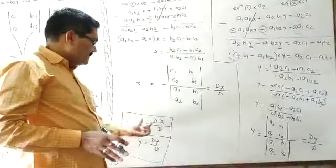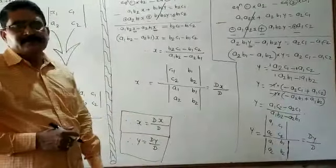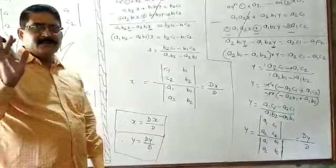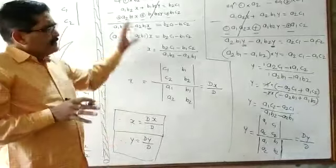This is Cramer's rule — x = Dx / D and y = Dy / D. That is how you prove Cramer's rule using the elimination method.